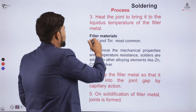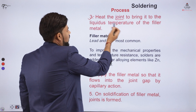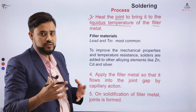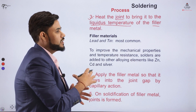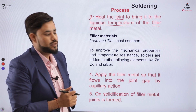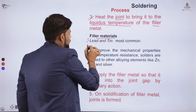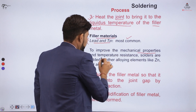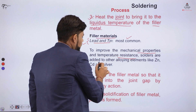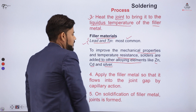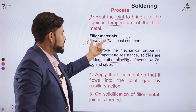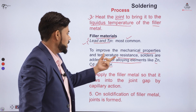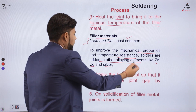The next step is heating the joint. We heat the joint to bring the filler material to its liquidus temperature, melting it so that it flows into the gap between the workpiece and the material to be joined. The most common filler material is lead and tin. To improve mechanical properties and temperature resistance, solders are alloyed with elements like zinc, cadmium, or silver.